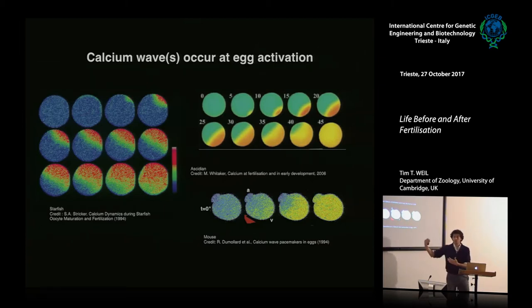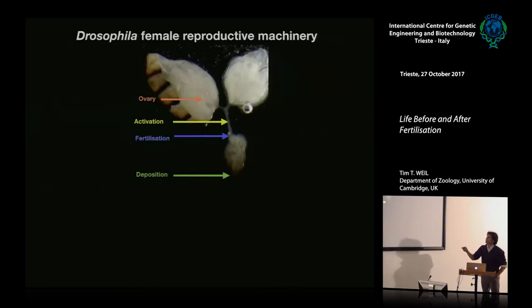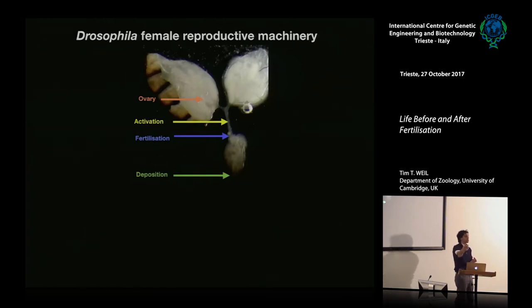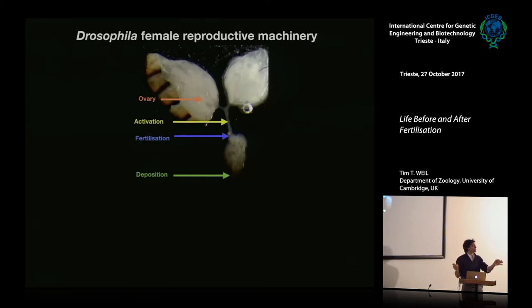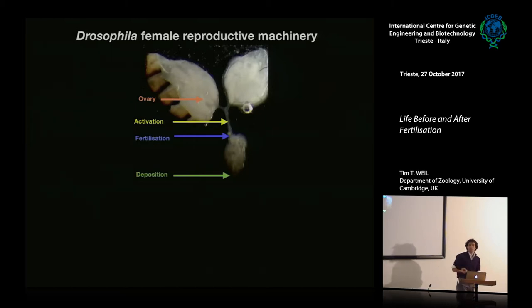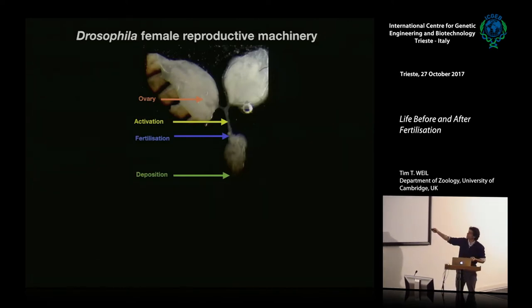In Drosophila female reproduction, the two ovaries pass eggs through the oviduct where they become activated. Activation triggers the cell cycle to restart and prepares for fertilization. In the uterus, the egg is fertilized through internal fertilization — Drosophila hold sperm in structures called the spermatheca and can store sperm for long periods, fertilizing eggs individually before depositing them.